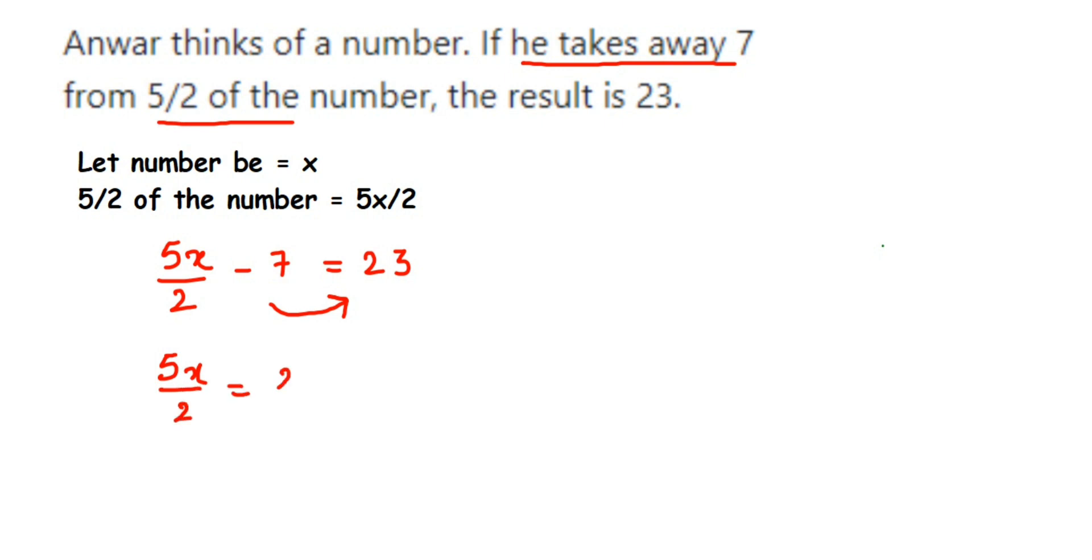Which is 30. So 5x upon 2 is equal to 30. Now transpose 2 to the other side. 2 is in division, when transposed to the other side it becomes multiplication. So 5x is equal to 30 multiplied by 2, which is equal to 60.